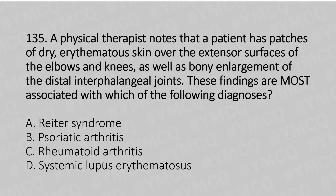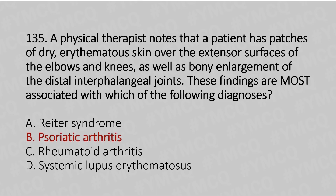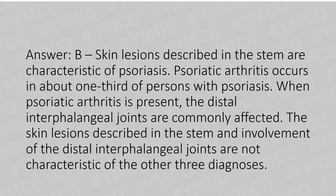Now let's move to Question 135. A physical therapist notes that the patient has patches of dry skin over the extensor surface of the elbow and knee, as well as bony enlargement of the distal interphalangeal joints. These findings are most associated with which diagnosis? Option A: Recent stroke. Option B: Psoriatic arthritis. Option C: Rheumatoid arthritis. Option D: Systemic lupus erythematosus. And the answer is Option B, psoriatic arthritis. The skin lesions described are characteristic of psoriasis. Psoriatic arthritis occurs in about one-third of persons with psoriasis, and when present, the distal interphalangeal joints are commonly affected. These findings are not characteristic of the other three diagnoses.